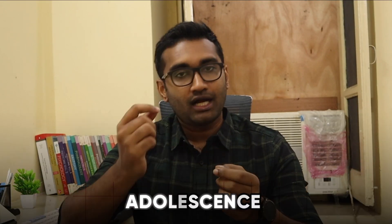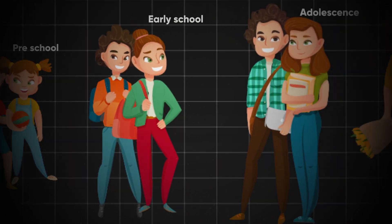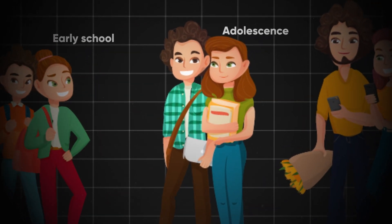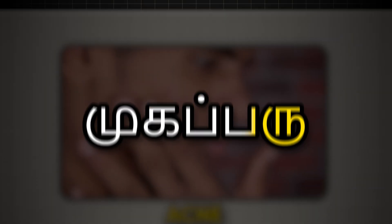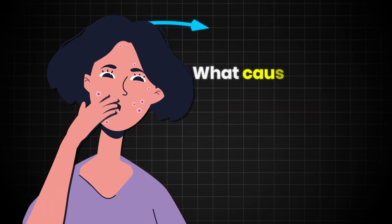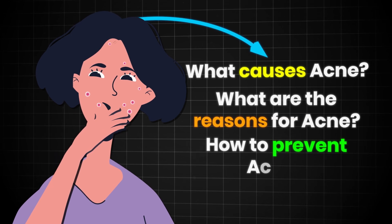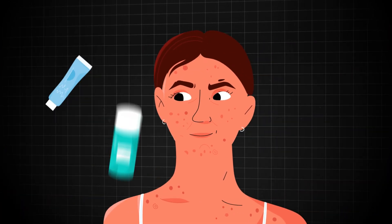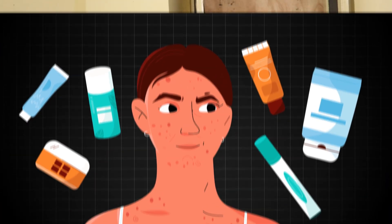We are going to the end of this stage. Adolescence is our stage. In this stage, there is one of the main things that we say. Acne is the main thing. Why do we treat acne, and why do we treat acne as a skin care routine? Let's get started.